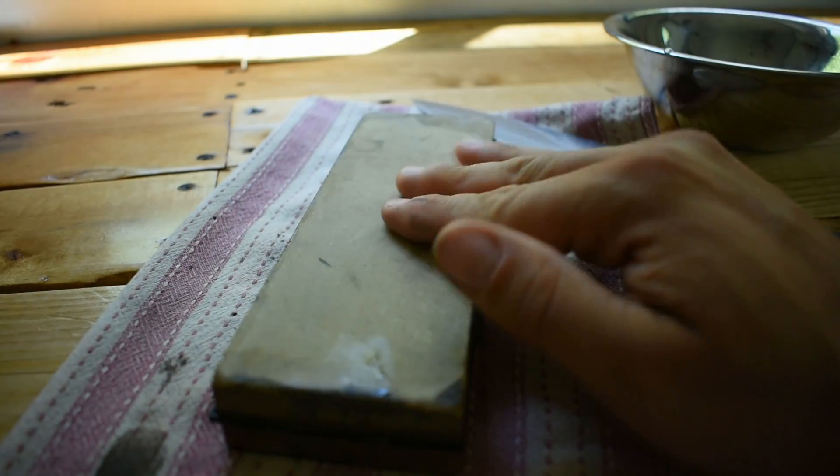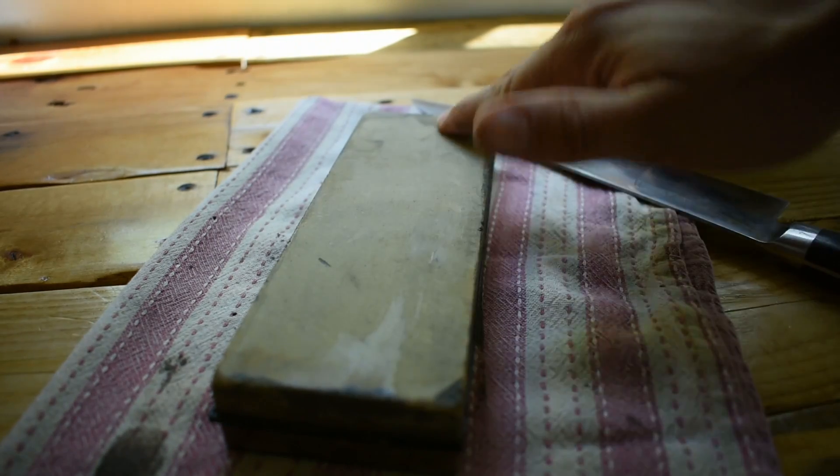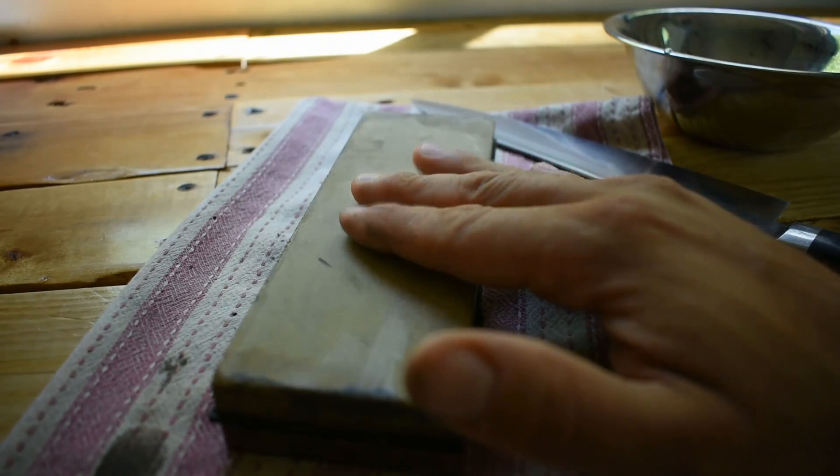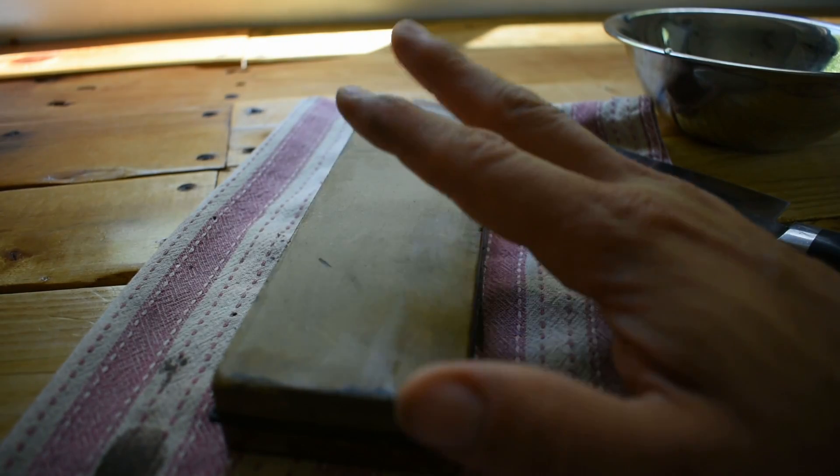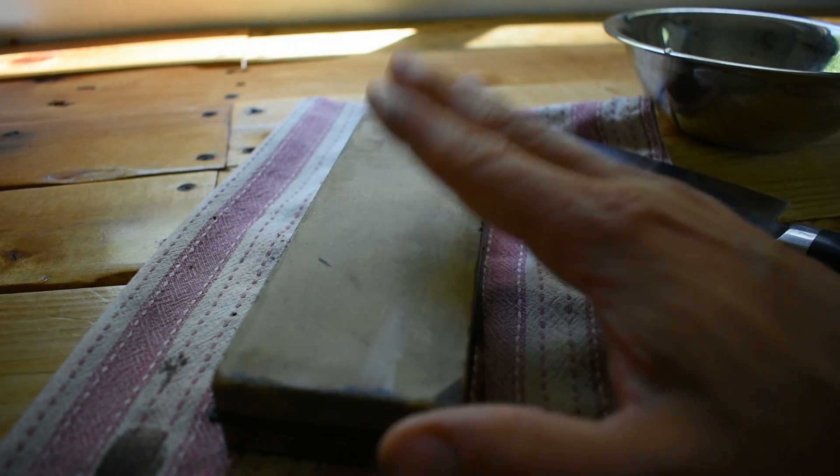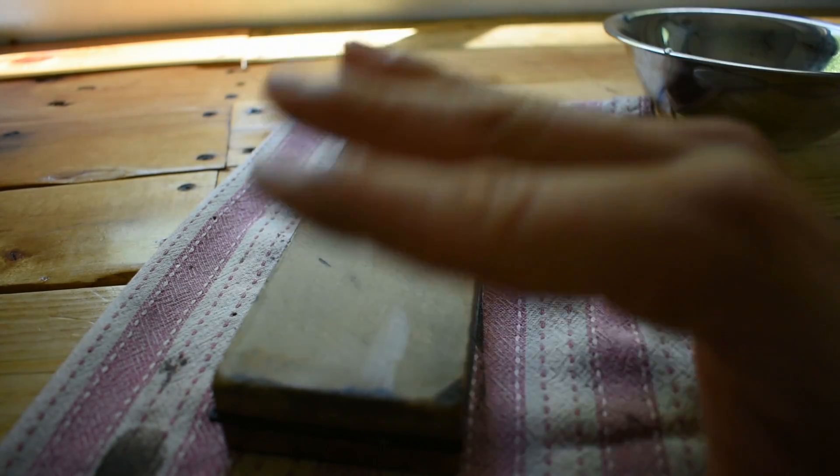So now we are on the finer side. This is the 6000 grit. This will polish the knife up, refine the edge and make it really nice. It's not really going to sharpen it, but make the edge polished.